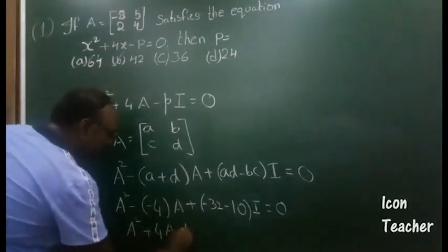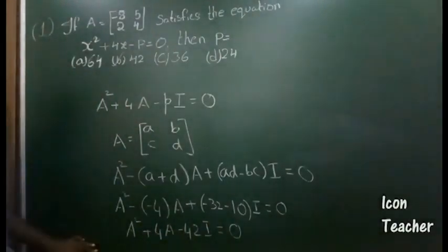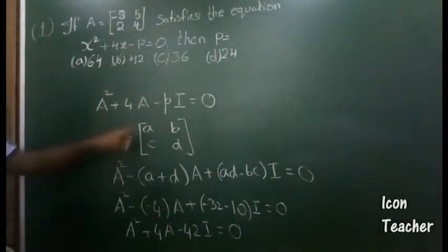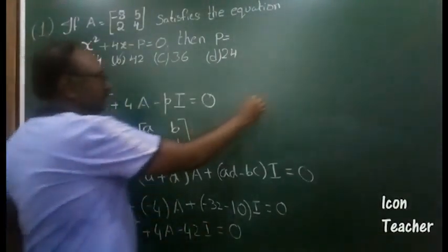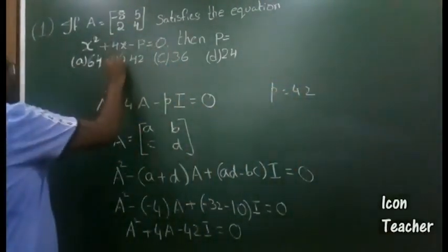So if you see these two equations, the value of p should be equal to 42. So option (b) is the correct answer.